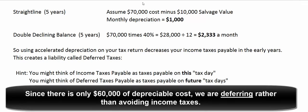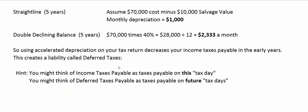If this asset has a net cost of $60,000, that's all the depreciation expense we can take. We can take a bunch early on and a lot less later, but no more than $60,000 total. Income taxes payable are the taxes due on tax day — March 15th for corporations. Deferred taxes payable is the difference between income tax expense on our books and income tax payable on our tax return — taxes that will be payable on future March 15ths.